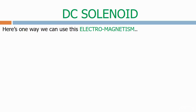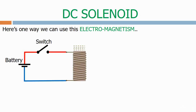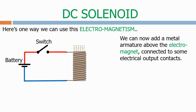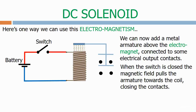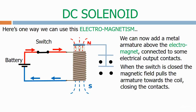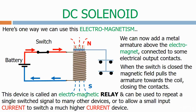Here's one way we can use this electromagnetism. Here we have the coil from before with a DC supply and a switch. We can now add a metal armature above the electromagnet, connected to some electrical output contacts. When the switch is closed the magnetic field pulls the armature towards the coil, closing the contacts. This device is called an electromagnetic relay and can be used to repeat a single switch signal to many other devices, or to allow a small input current to switch a much higher current device.